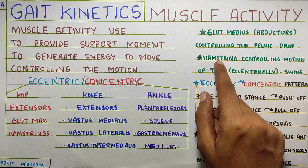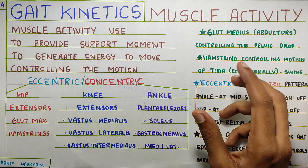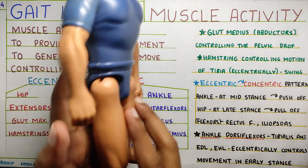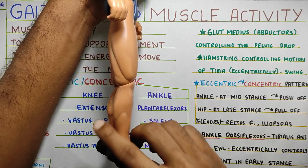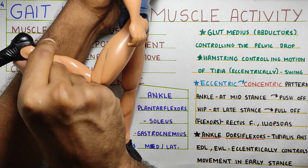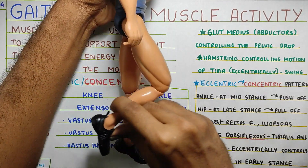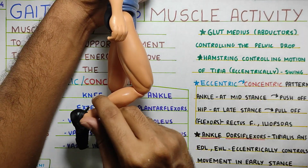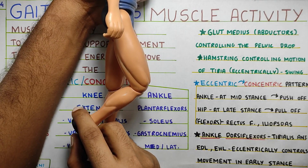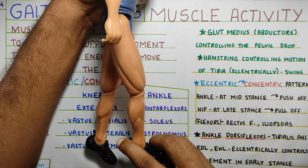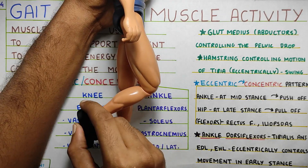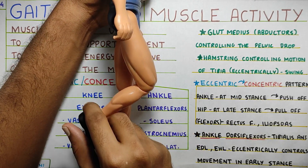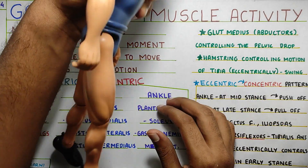Moving to the knee joint — at the knee joint, there is the hamstring, which is controlling your motion downwards. During the swing phase, when your leg is swinging, the hamstring or knee flexor will be controlling the downward movement of the tibia. That eccentric activity will be seen in the hamstring.